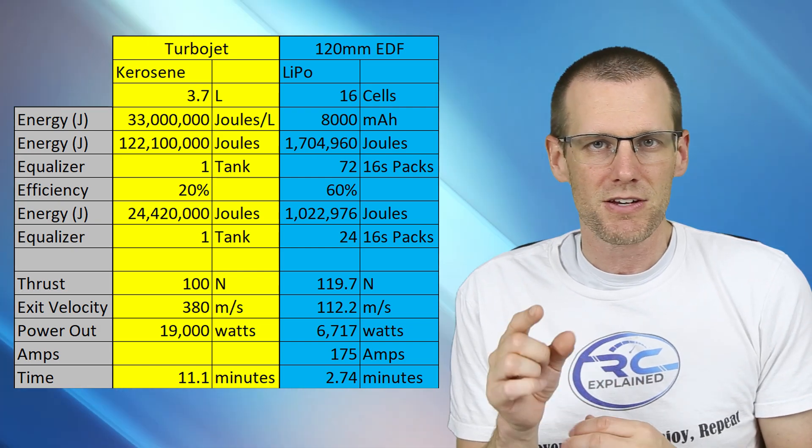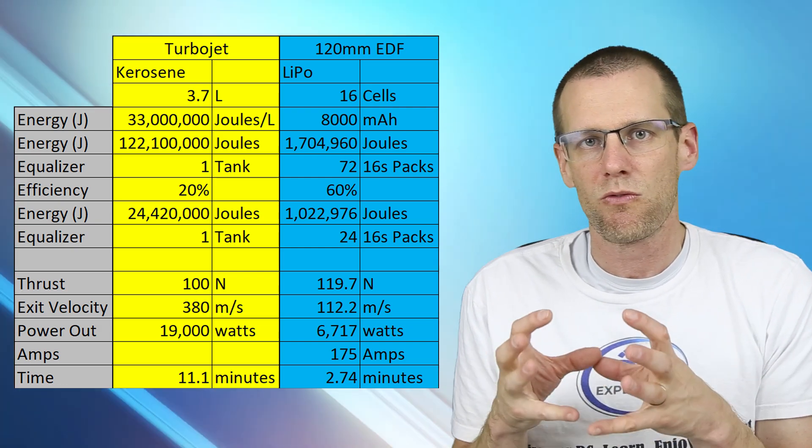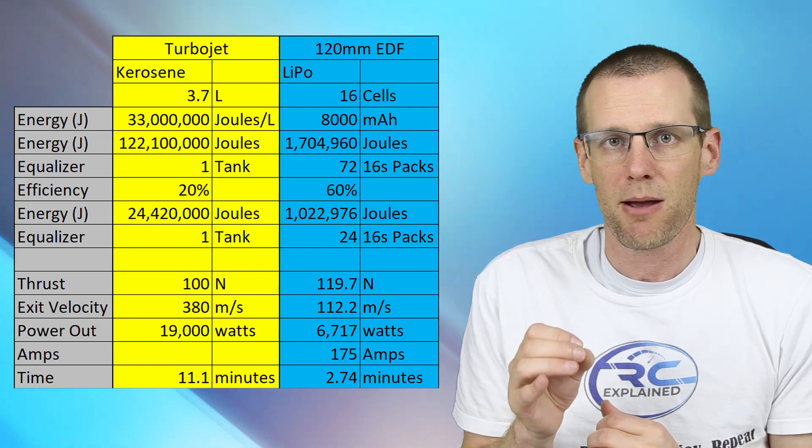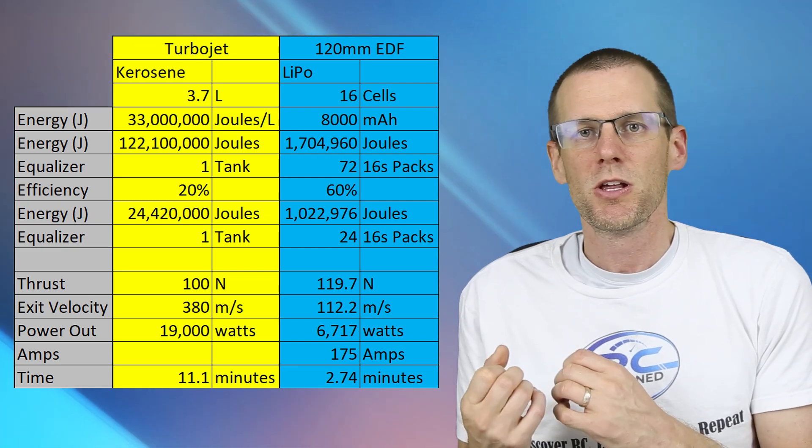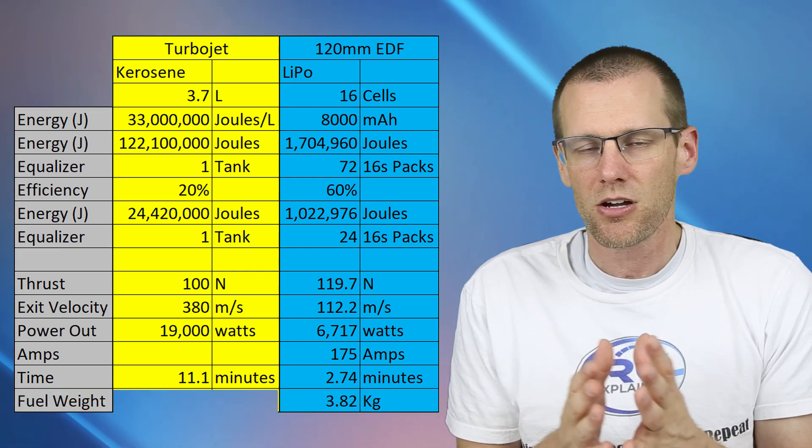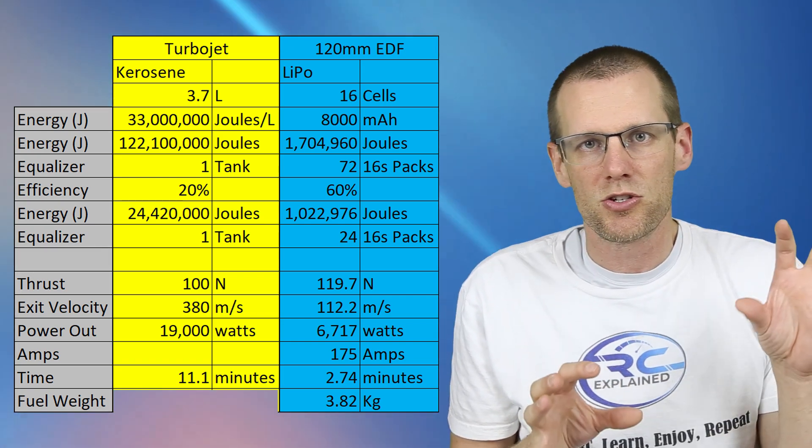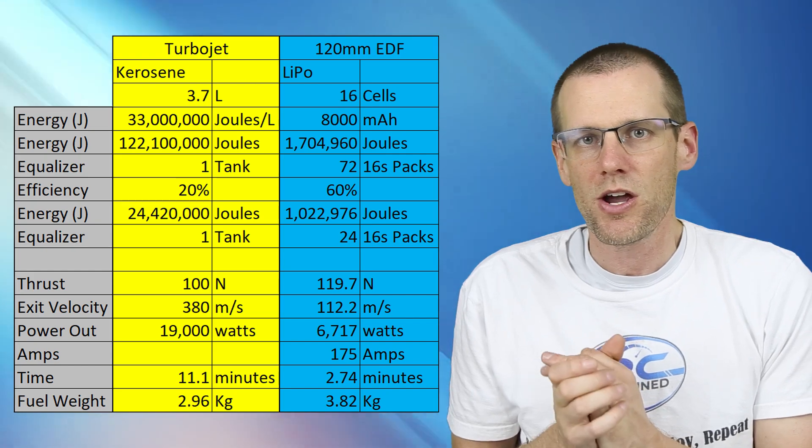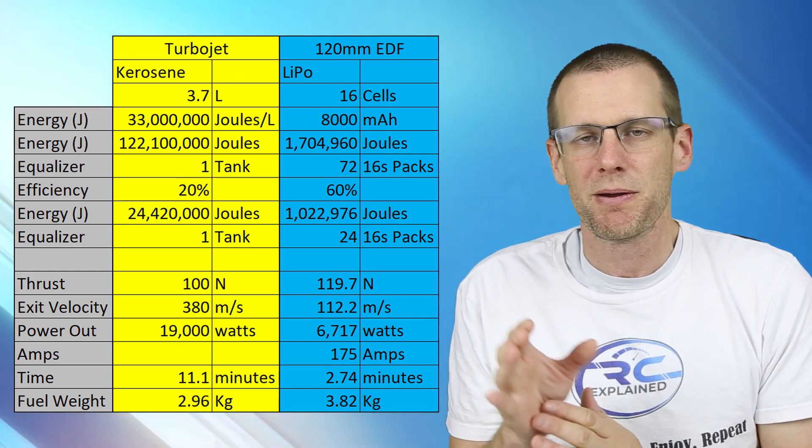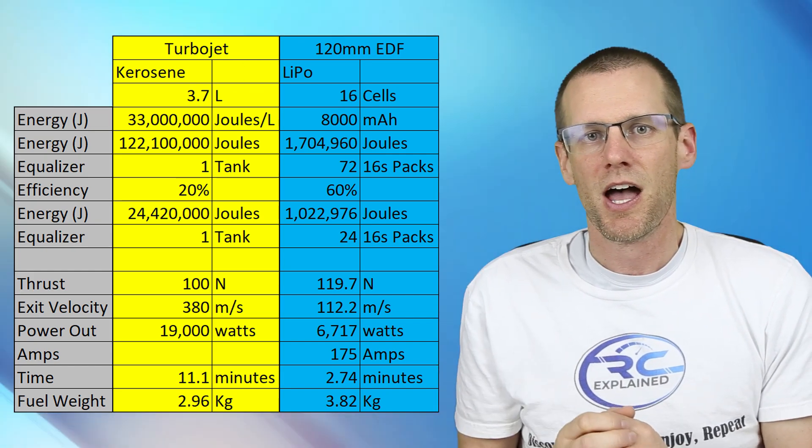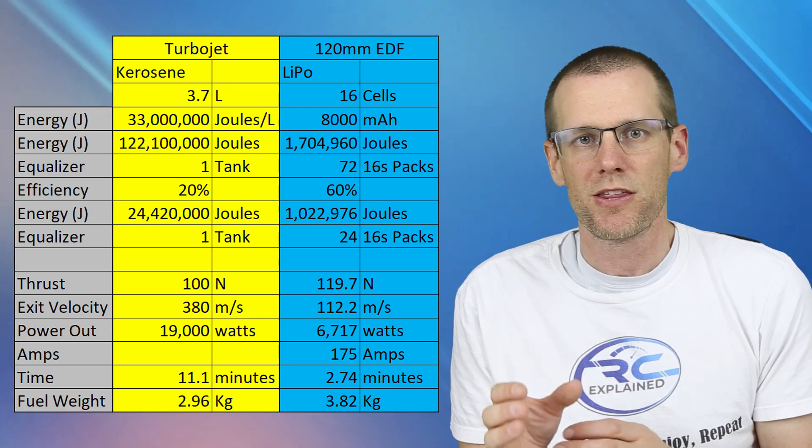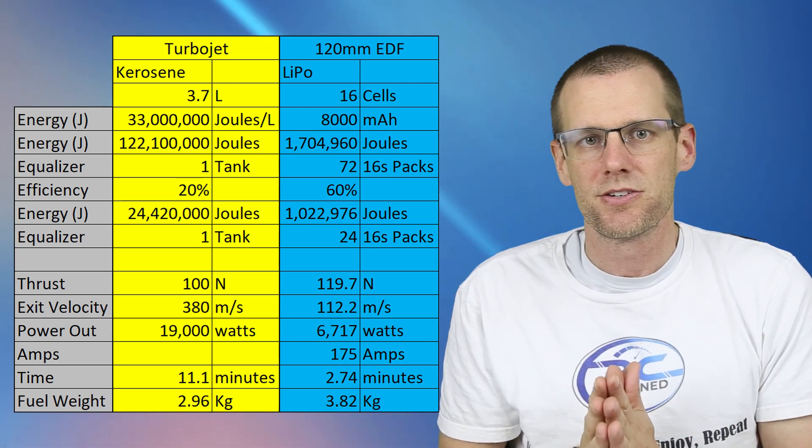Now the fuel weight, this is kind of interesting because we look at the amount of weight that that 16 cell eight amp hour battery pack would be, you'd be looking at about 3.82 kilograms of weight for that specific battery pack setup. Even with this setup, comparing the two sources of fuel, we are still far behind the potential and the capabilities of a turbojet engine burning that 3.7 liters of kerosene.